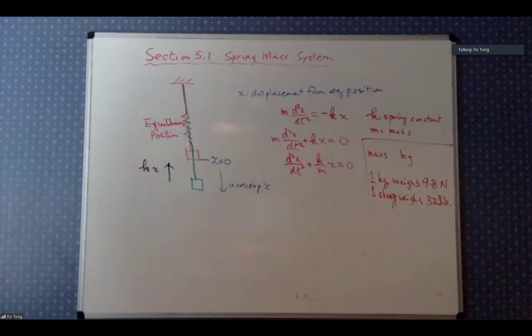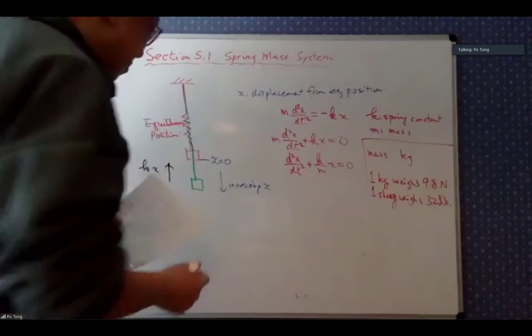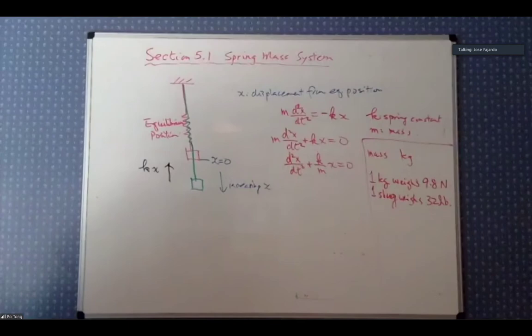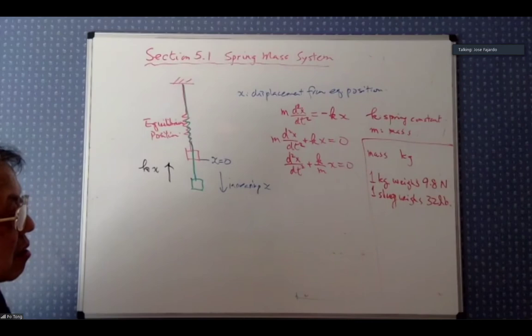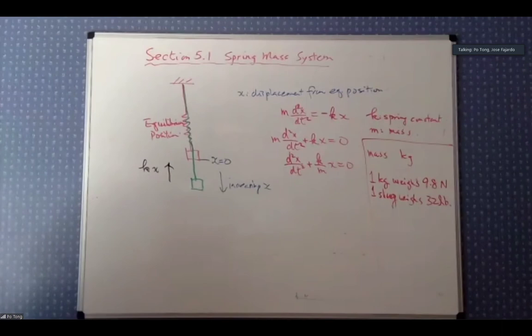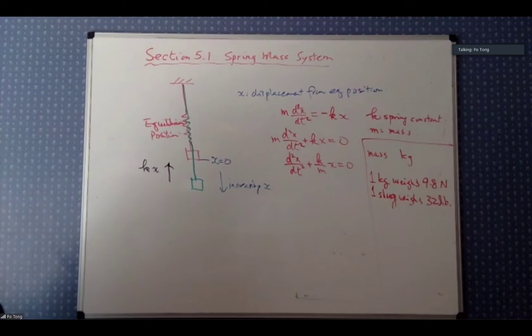One slug weighs 32 pounds. Our textbook uses slugs for mass in British-unit problems; in metric-system problems it uses kilograms. The reason is just that America still uses pounds — we are stubborn. Your physics book probably uses meters and kilograms, which is much less confusing.